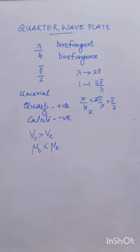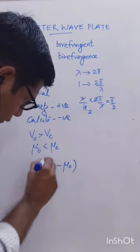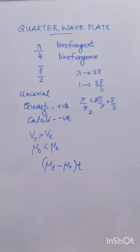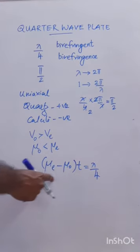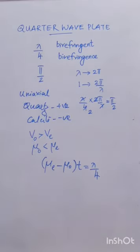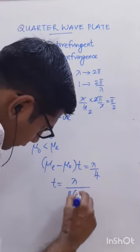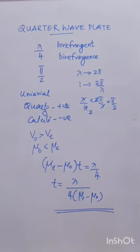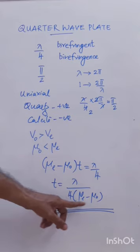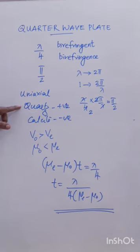For a positive uniaxial crystal quarter wave plate, the thickness must be such that it introduces a path difference of lambda/4 or a phase difference of pi/2. For a quartz wave plate, the path difference developed between them is (mu_e - mu_o) × t = lambda/4, where t is the thickness. Rearranging, the thickness of the quarter wave plate is: t = lambda / [4(mu_e - mu_o)]. This equation is applicable only for a positive crystal.